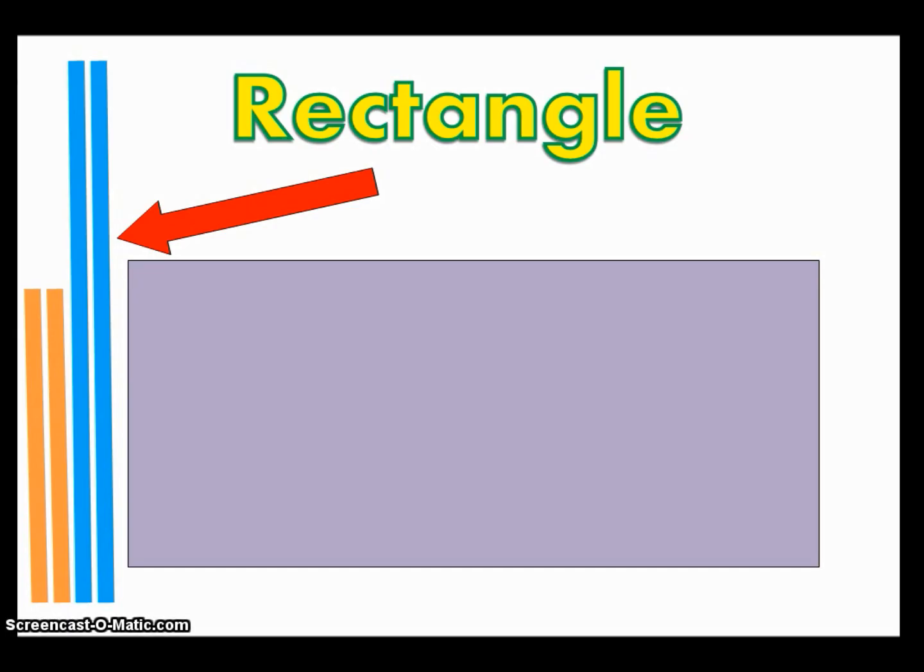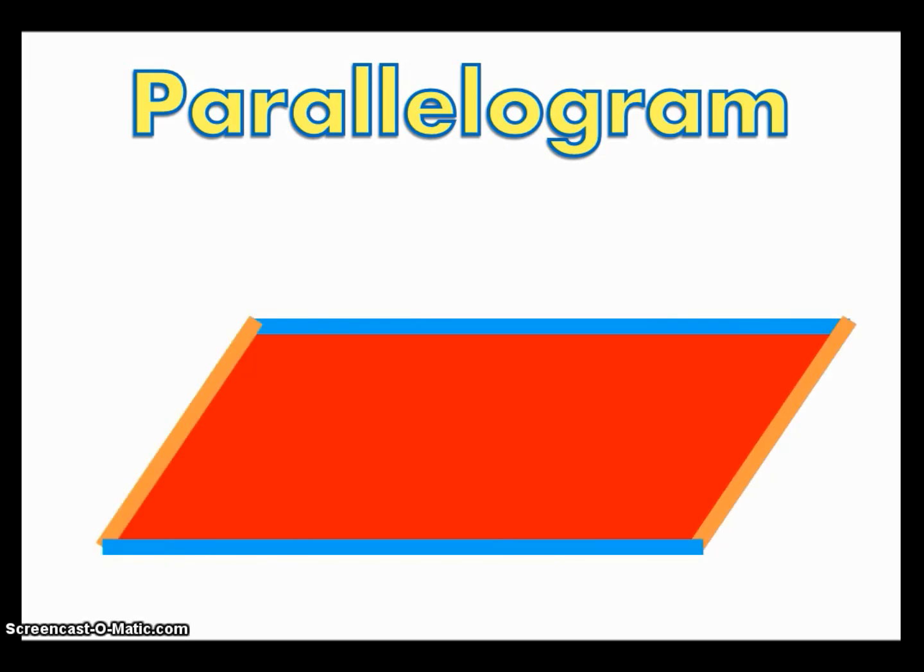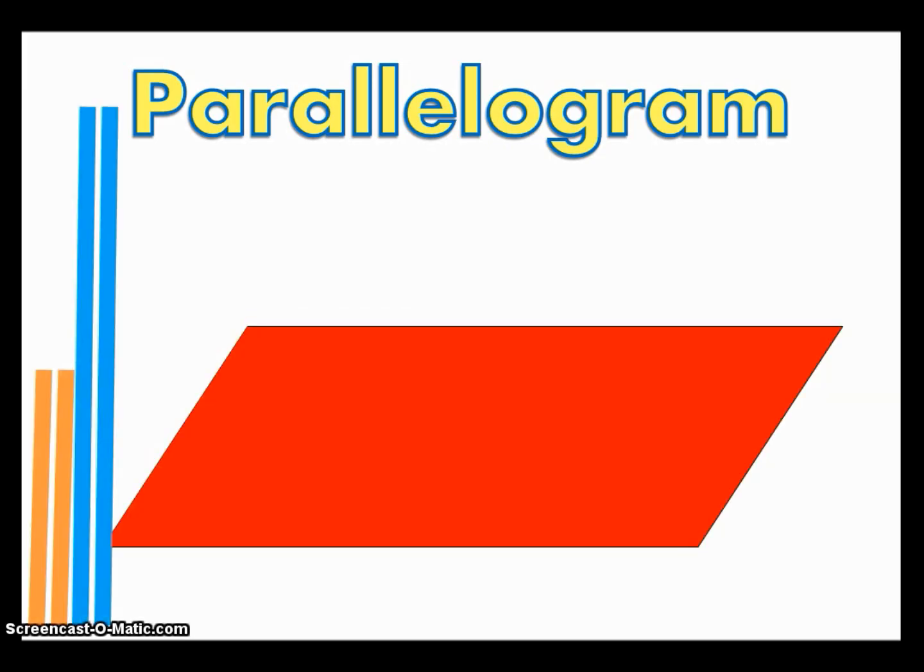And the next quadrilateral is called a parallelogram. These ones do not have any right angles, none. They do have two sets of parallel sides, though. And also, if we were to line up these sides, just like the rectangle, they would not be equal.